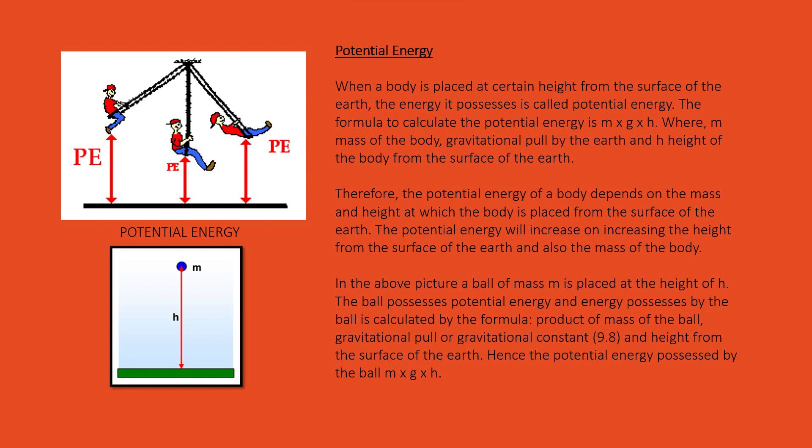The potential energy will increase on increasing the height from the surface of the earth and also the mass of the body. In the above picture, a ball of mass m is placed at the height of h. The ball possesses potential energy, and the energy possessed by the ball is calculated by the formula: product of mass of the ball, gravitational pull or gravitational constant 9.8, and height from the surface of the earth. Hence, the potential energy possessed by the ball is m multiplied by g multiplied by h.